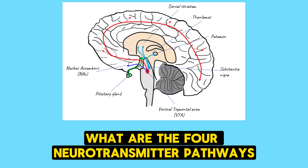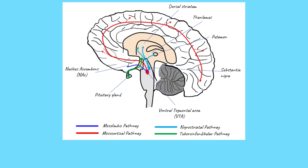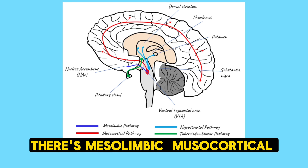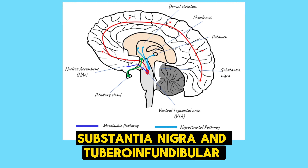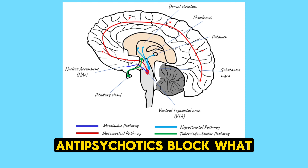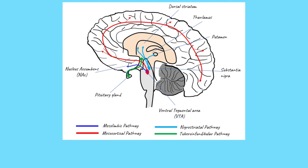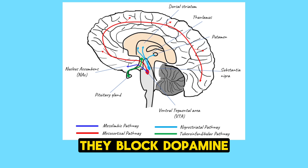For antipsychotic action, what are the four neurotransmitter pathways? There's mesolimbic, mesocortical, substantia nigra, and tuberoinfundibular. Antipsychotics block dopamine and they work on all four of these tracks.